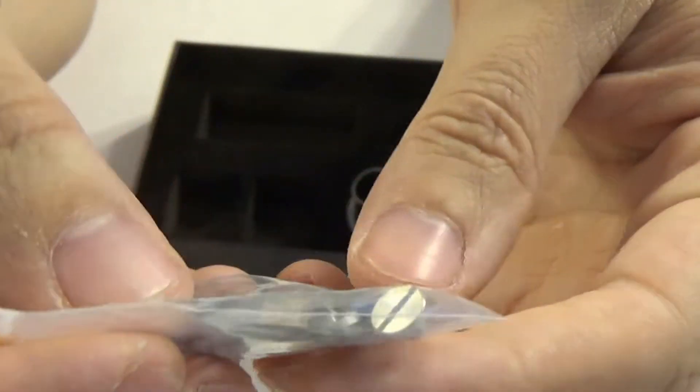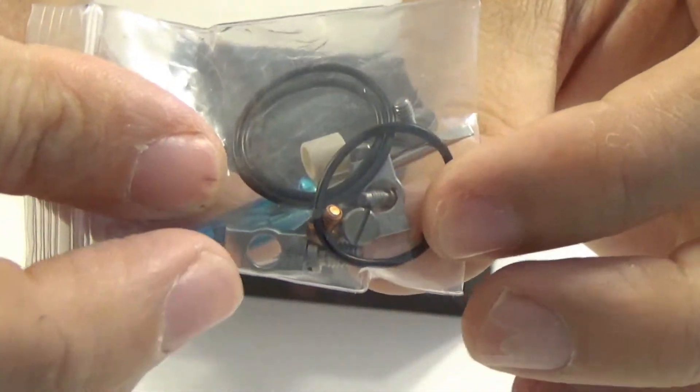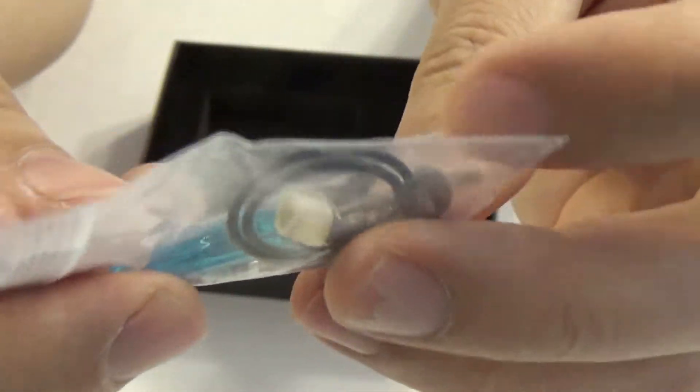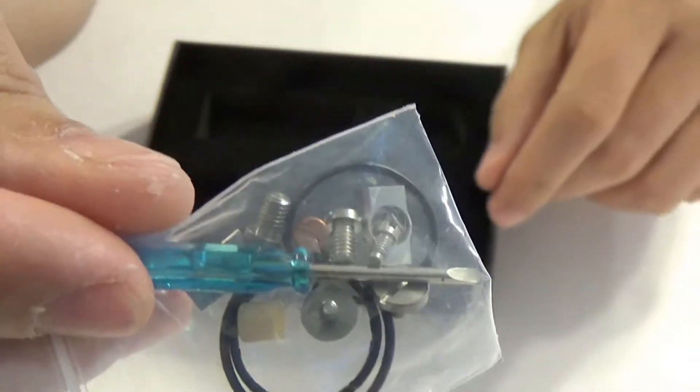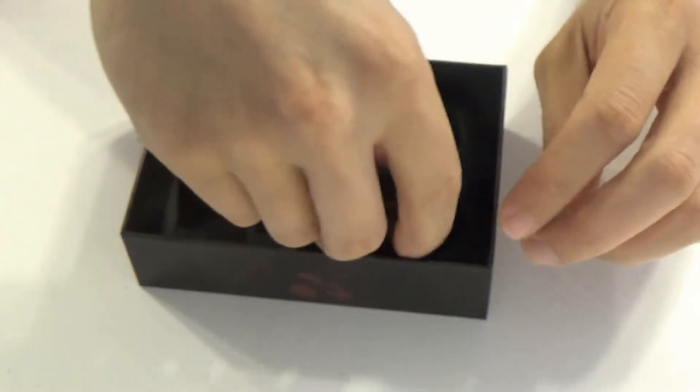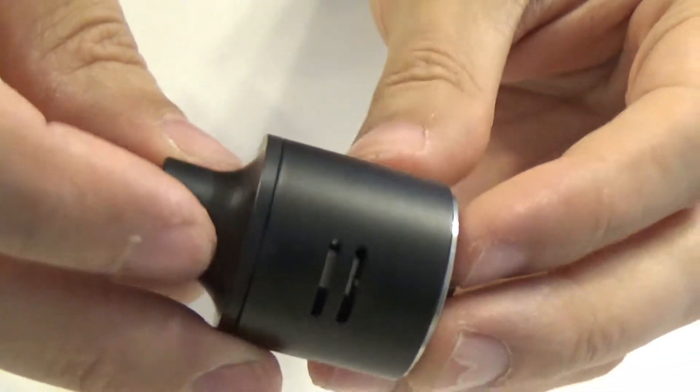Extra insulator, O-rings, extra clamps, and the little blue screwdriver. I recommend you don't use the little blue screwdriver for changing the deck around but I'll show you that in a second as well.